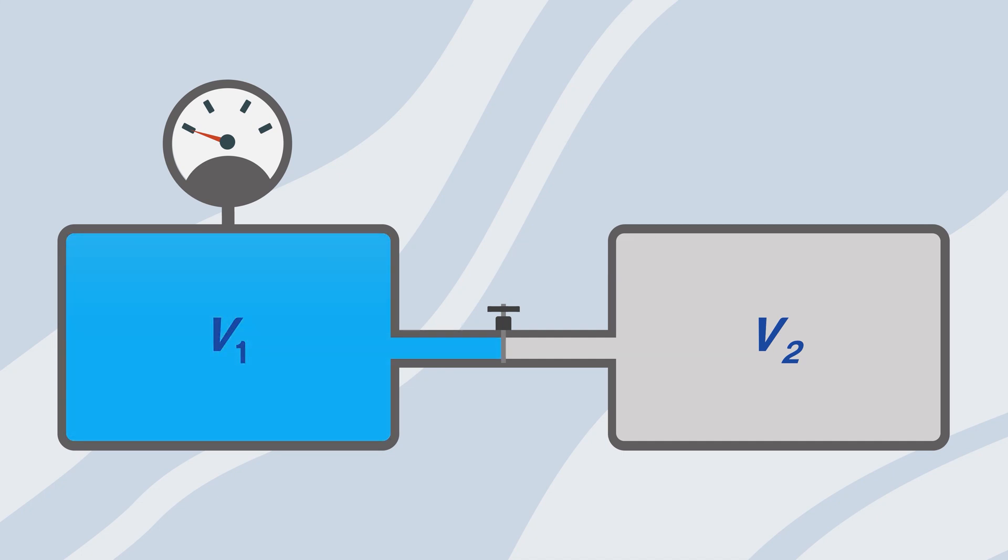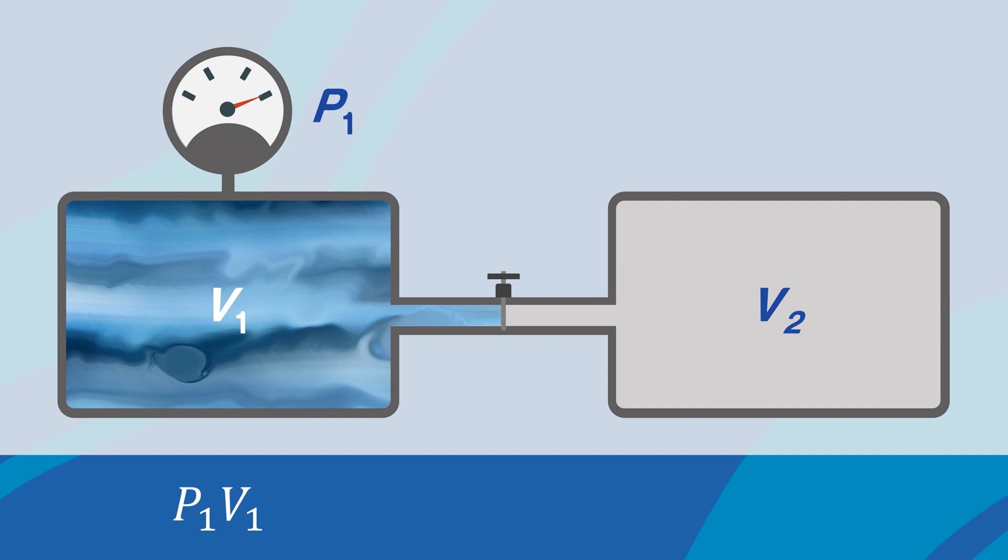To break down the process, we need to understand the following. First, we fill chamber 1 with helium, and then record the pressure, thus we have p1 and v1.